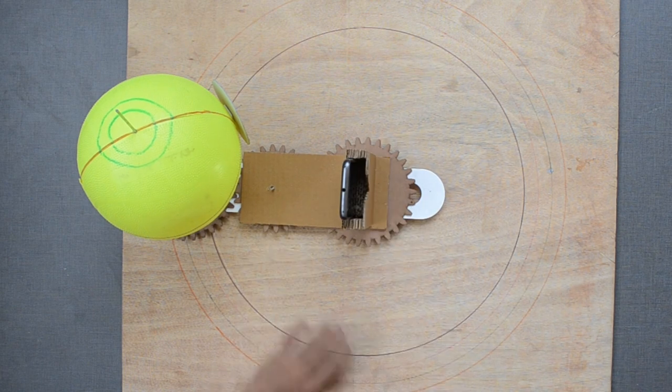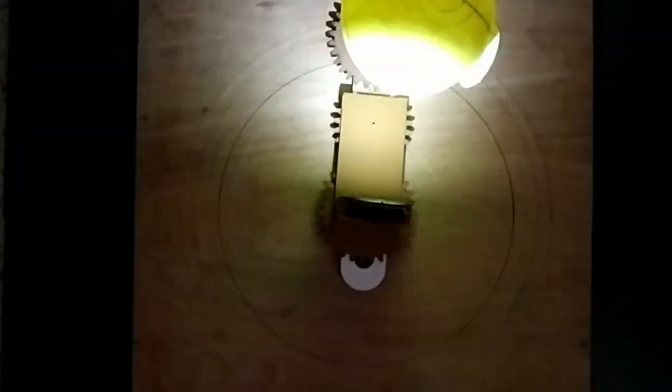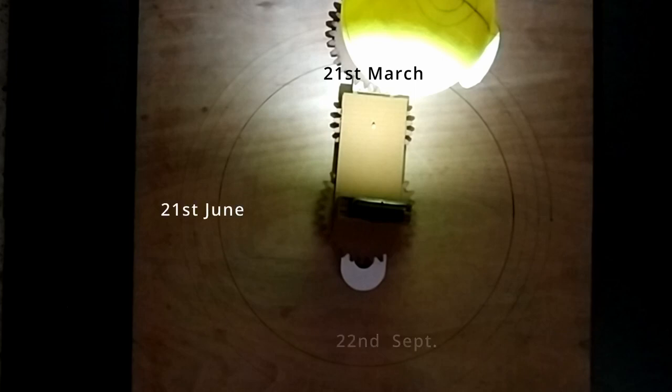We will move the Earth through these four positions around the sun: 21st March, 21st June, 22nd September, and 22nd December.